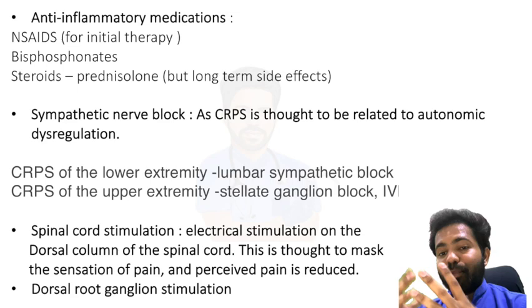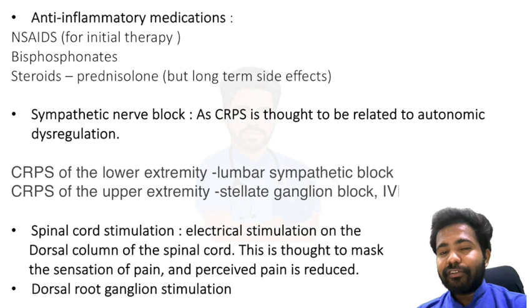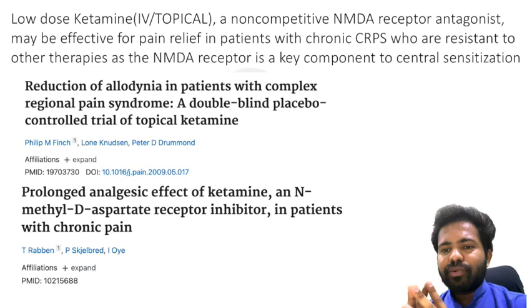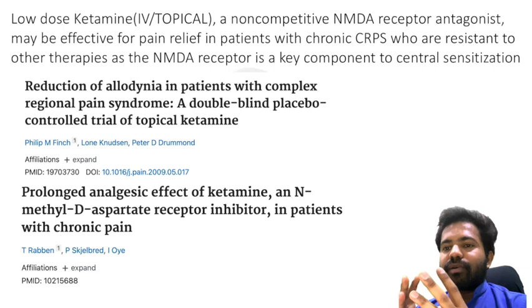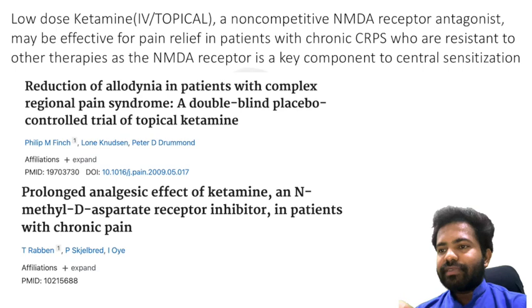Invasive techniques include spinal cord stimulation — electrical stimulation on the dorsal column of the spinal cord — which is thought to mask pain sensation and reduce perceived pain. Dorsal root ganglion stimulation is another invasive method. Studies have shown reduction of allodynia in CRPS patients and a prolonged analgesic effect of ketamine, an NMDA inhibitor, in patients with chronic pain. Ketamine, a non-competitive NMDA antagonist, may be effective for pain relief in chronic CRPS patients resistant to other therapies, as the NMDA receptor is a key component of the central sensitization mechanism.